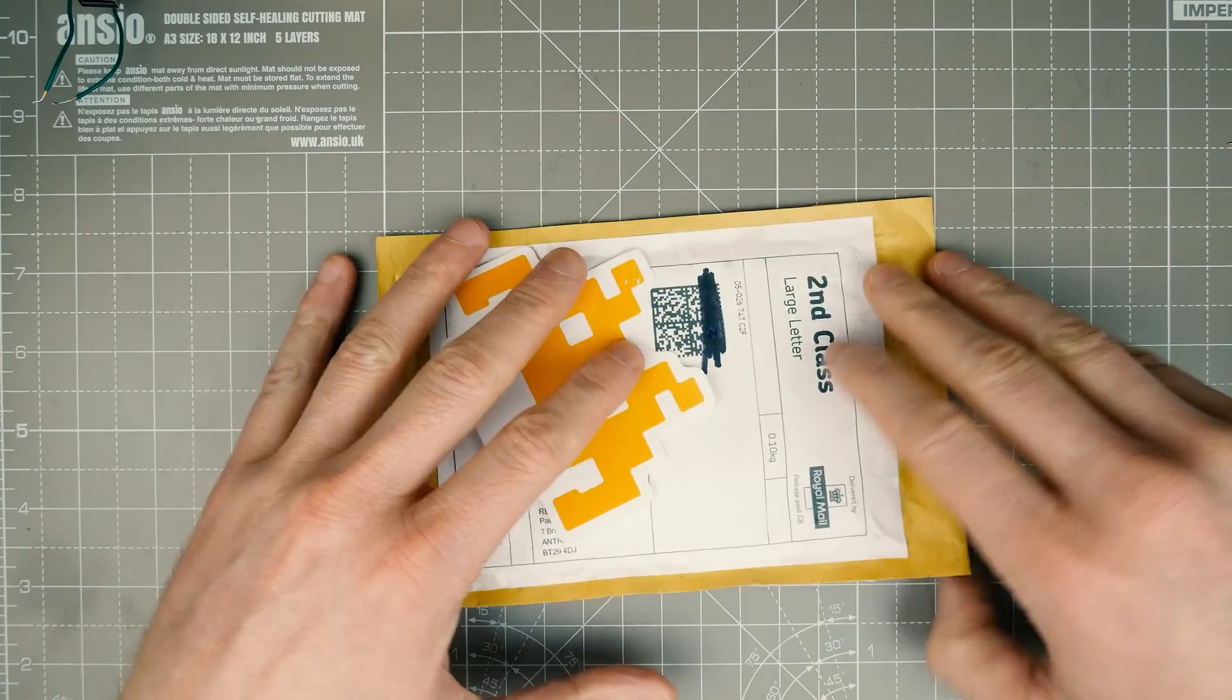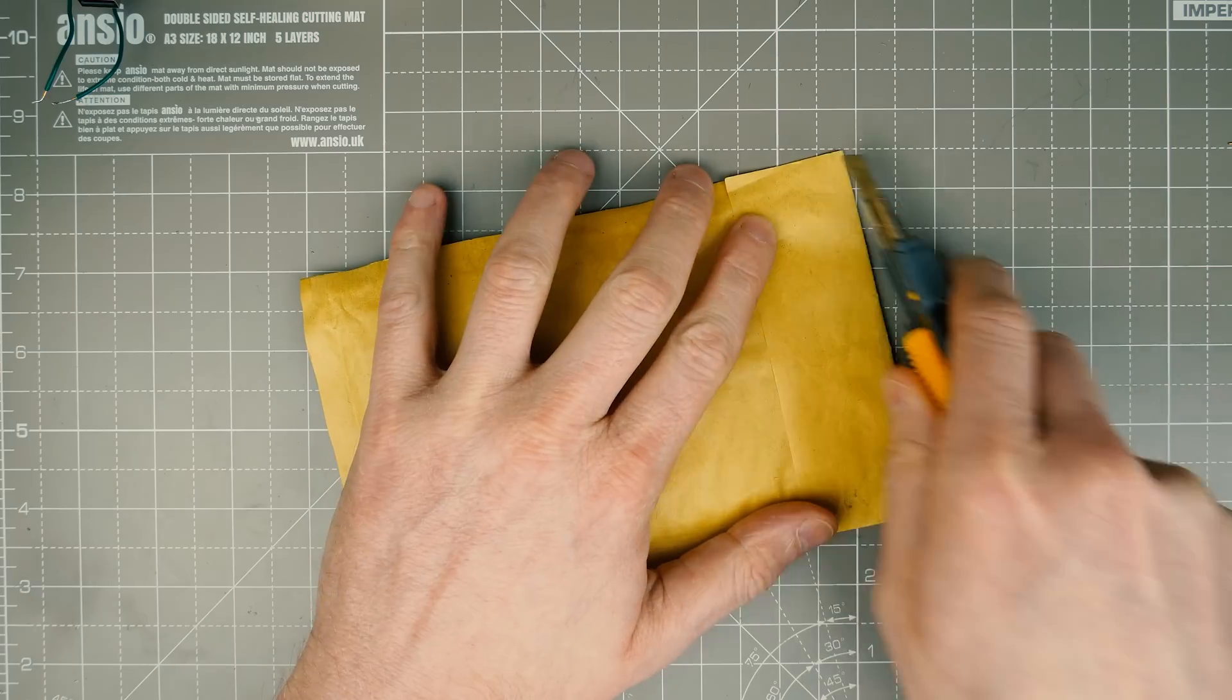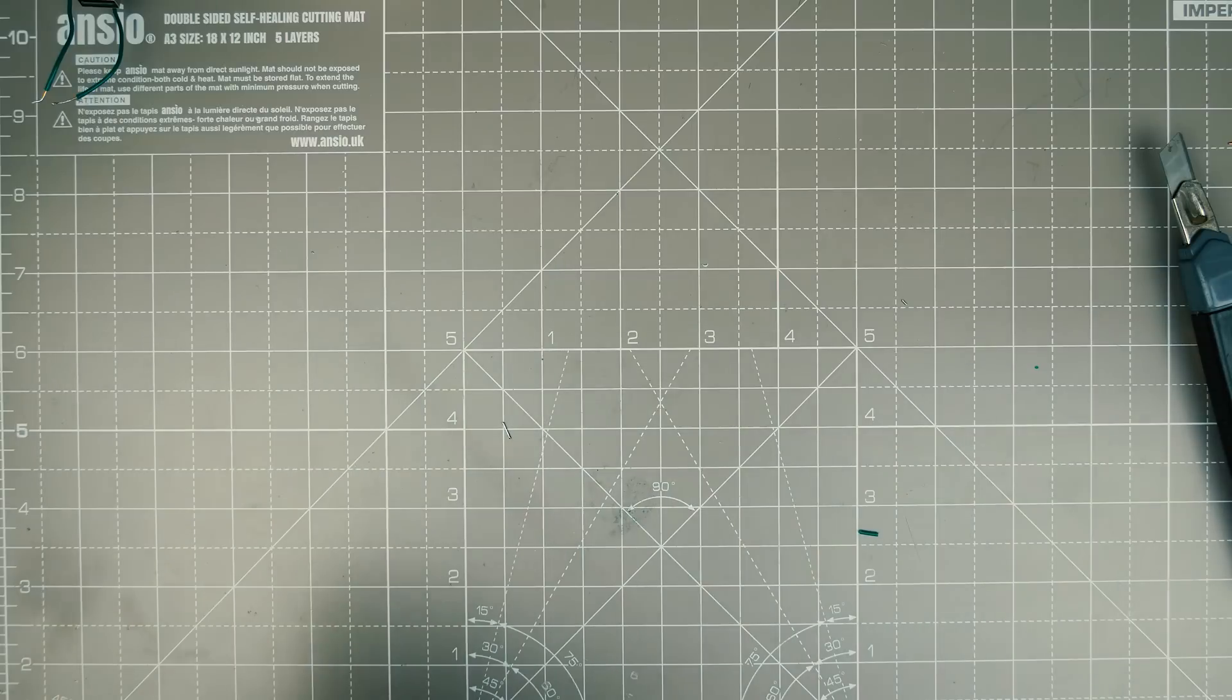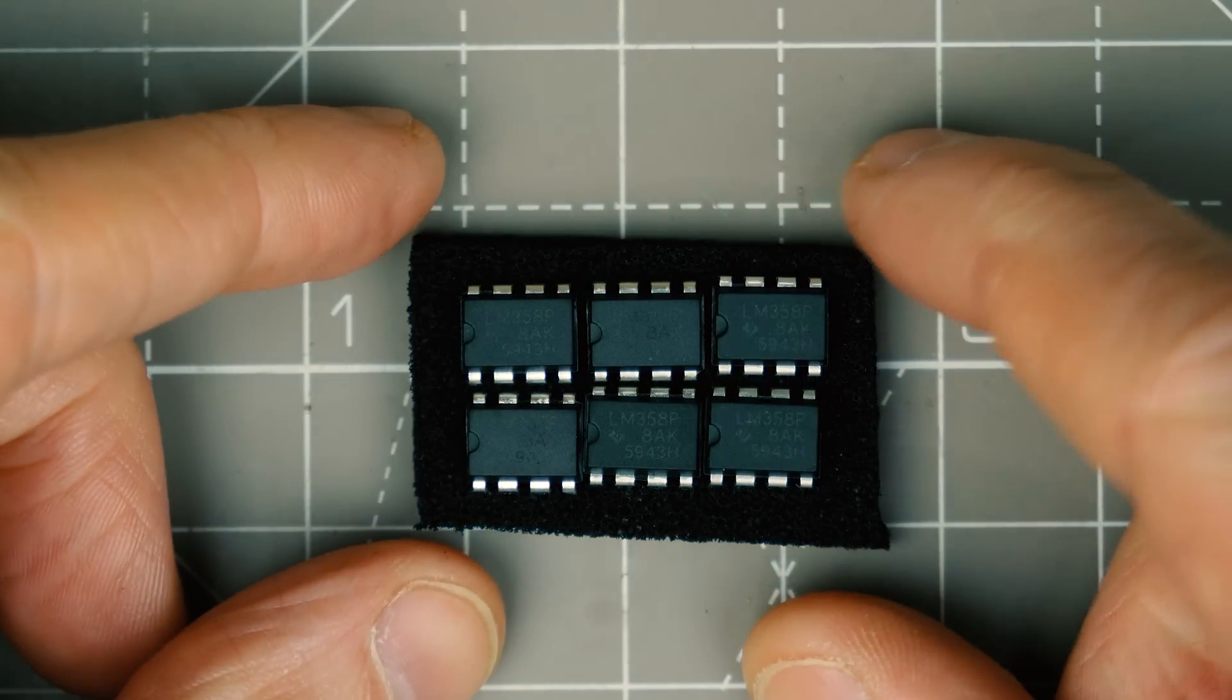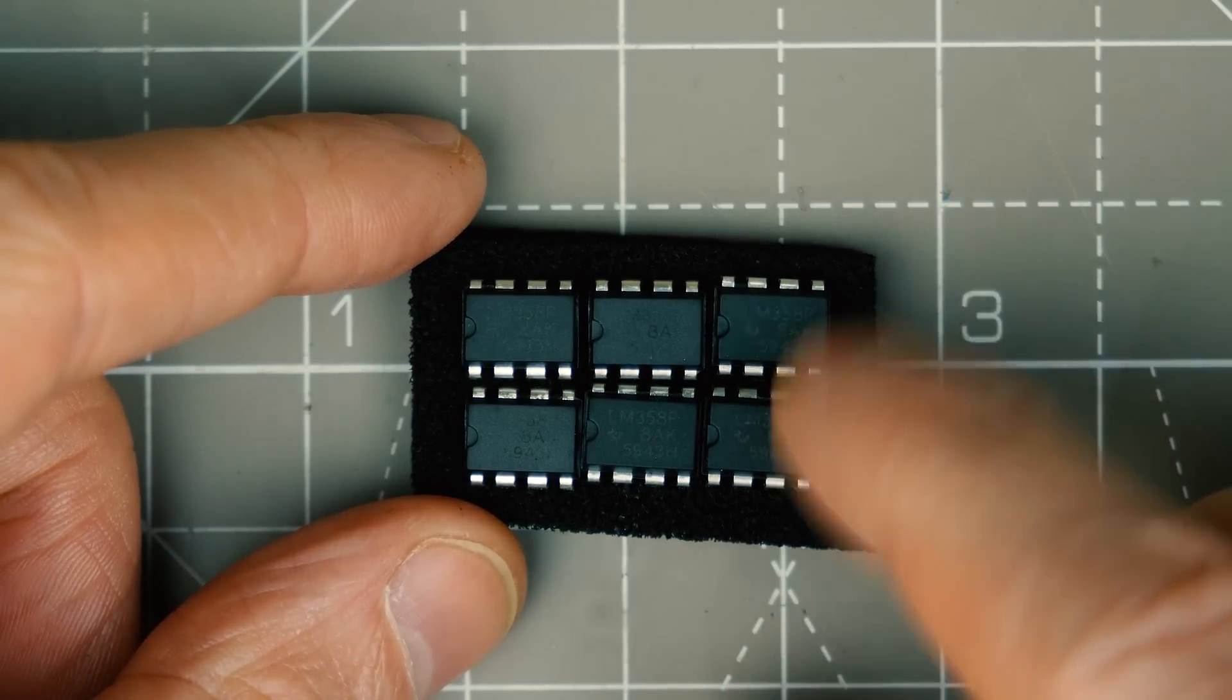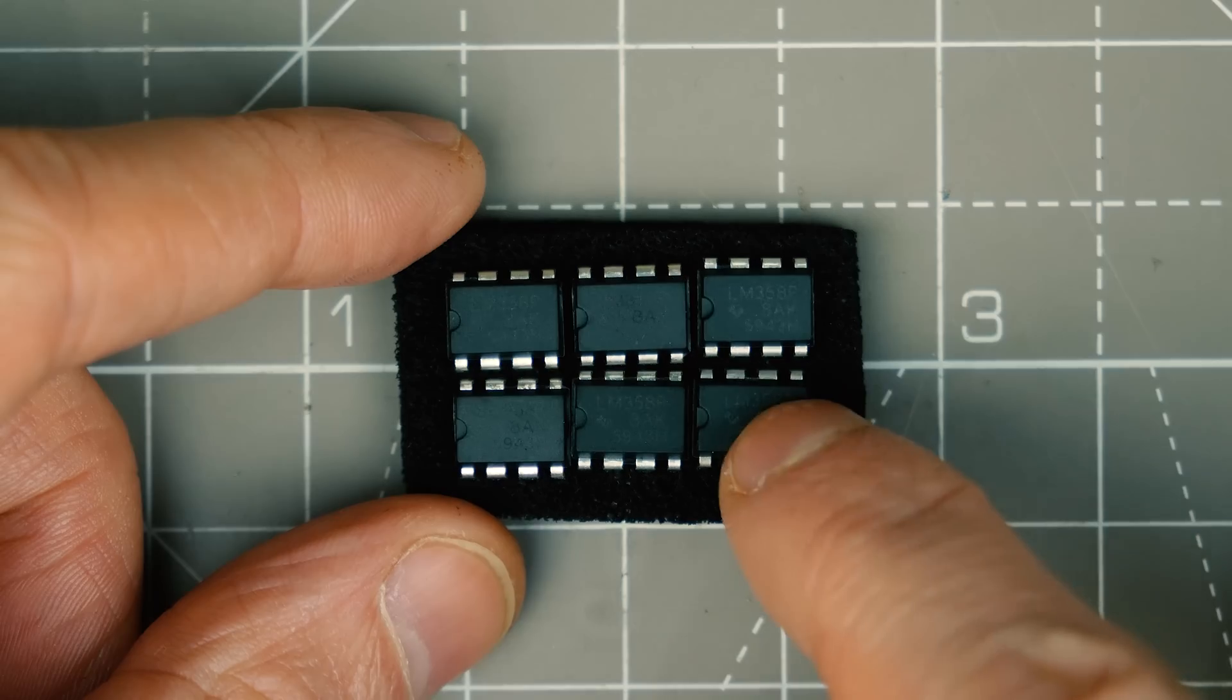Let's start with this one here. Oh, all the post-it notes come off. Brilliant. Let's have a little look at these. That's weird. I thought these were a 16-pin package. I thought I'd ordered the LM3916.